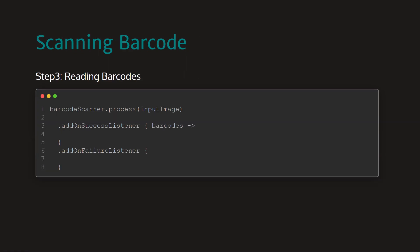The final step is reading the barcode, which we will do using the barcode scanner that we created in the first step. To scan a barcode, we will call the process function from the barcode scanner object. This function takes an image as the parameter. We already have the image proxy, and from the image proxy we will get the image to pass to this function. To get the result, we will attach a success and a failure listener.